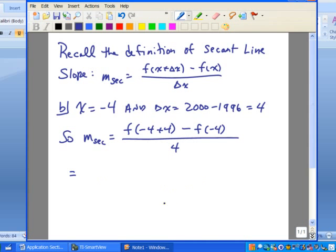So from the values in our table that we generated in part A, we have f of 0, that's the first term of the numerator. f of negative 4 plus 4 is 29.76, minus 36.56, divided by 4.